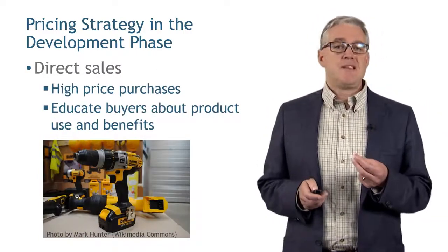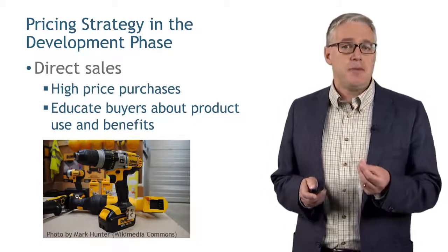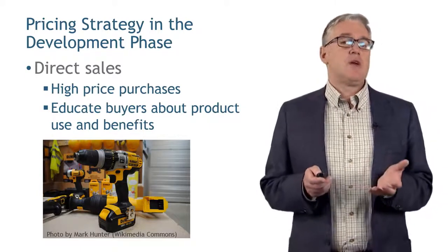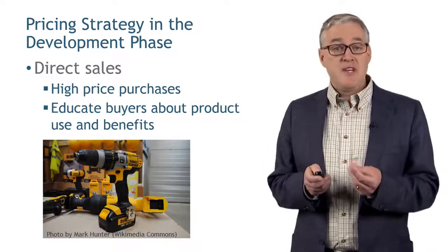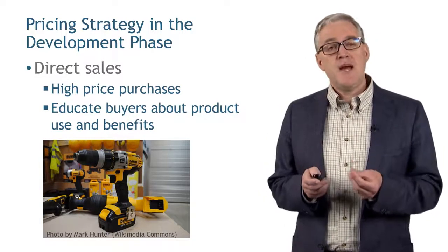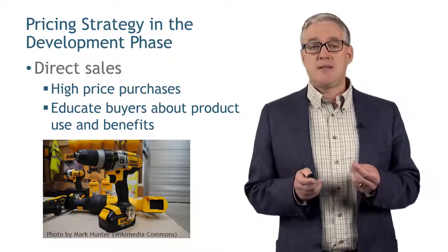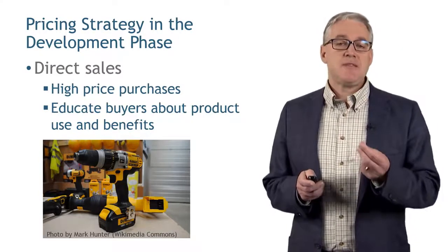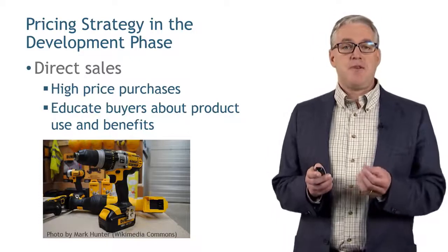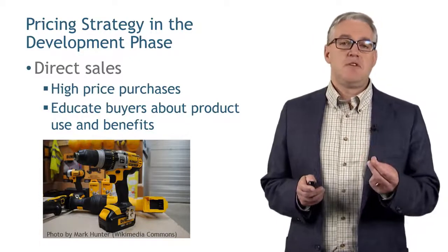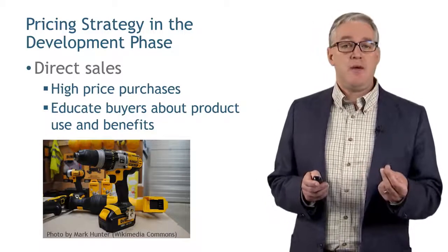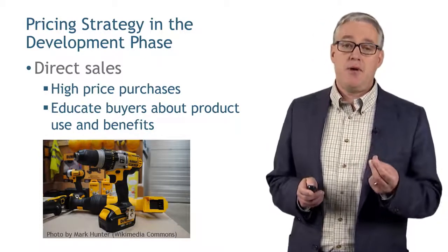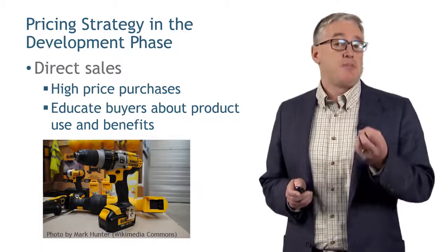What if you have a product that's a high-priced purchase and a little bit complicated? Take the DeWalt drill. When DeWalt came out with this drill, they asked how they would communicate the benefits of a reasonably high-priced product. In that case, some amount of direct sales makes sense. DeWalt sent salespeople out to contractors' job sites, showed them the features and benefits of the drill, and used that to spur sales in stores like Lowe's and Home Depot. Without that direct sales effort, they probably would not have been able to command the high prices they wanted for this premium quality drill.